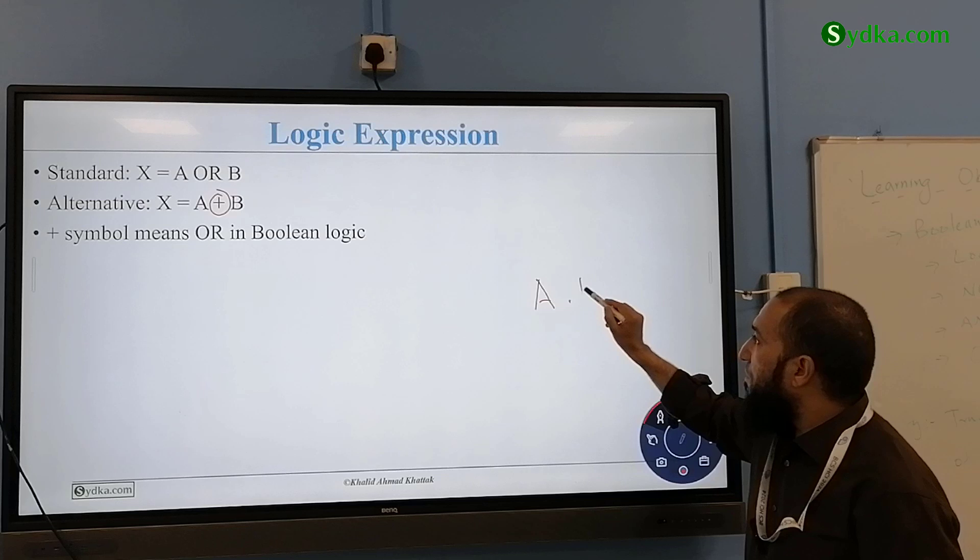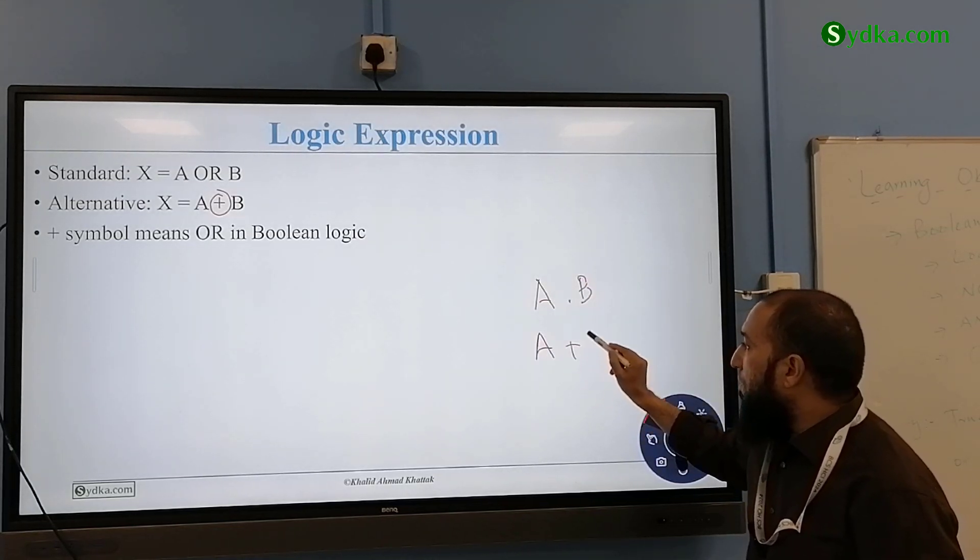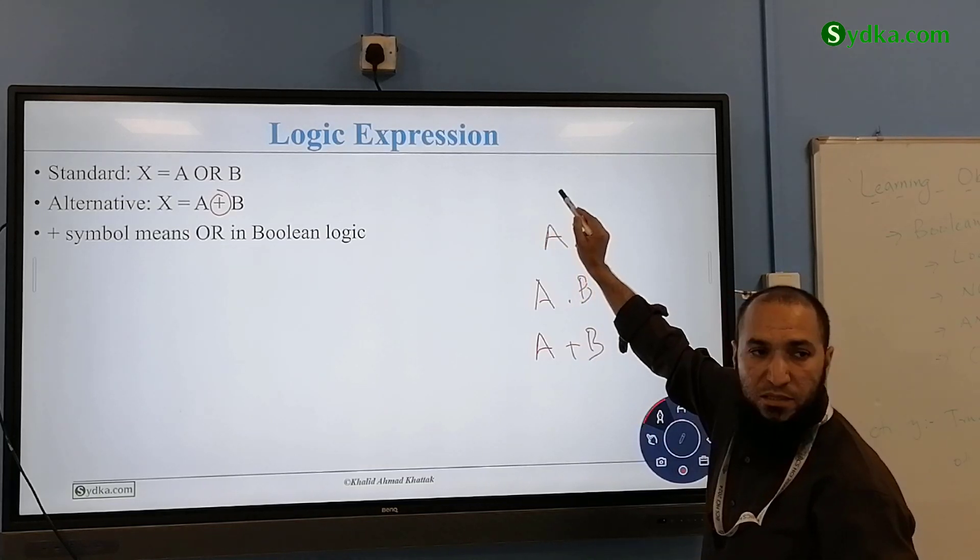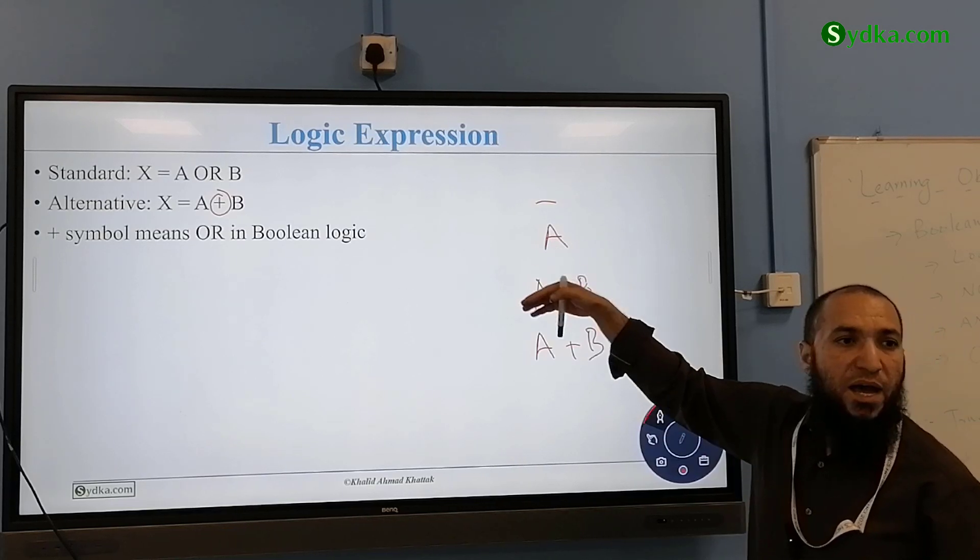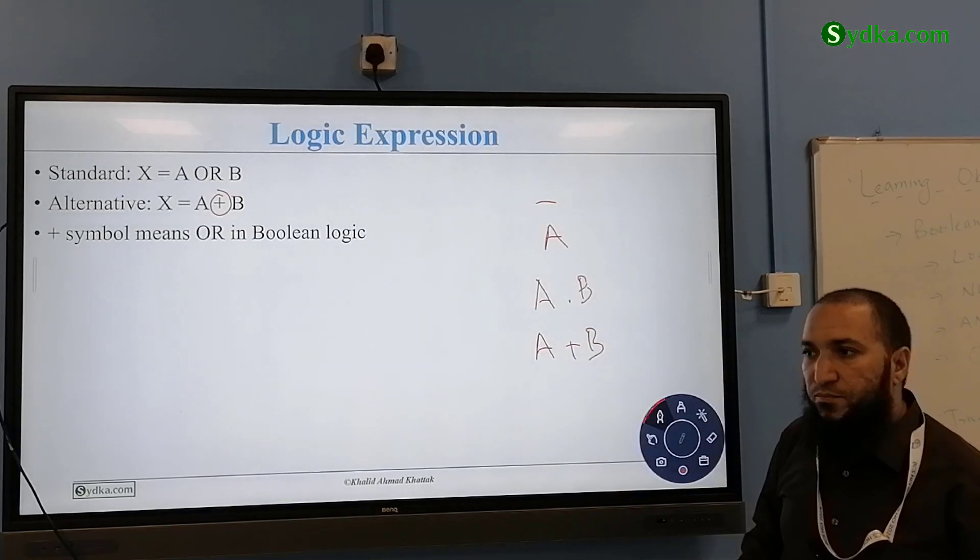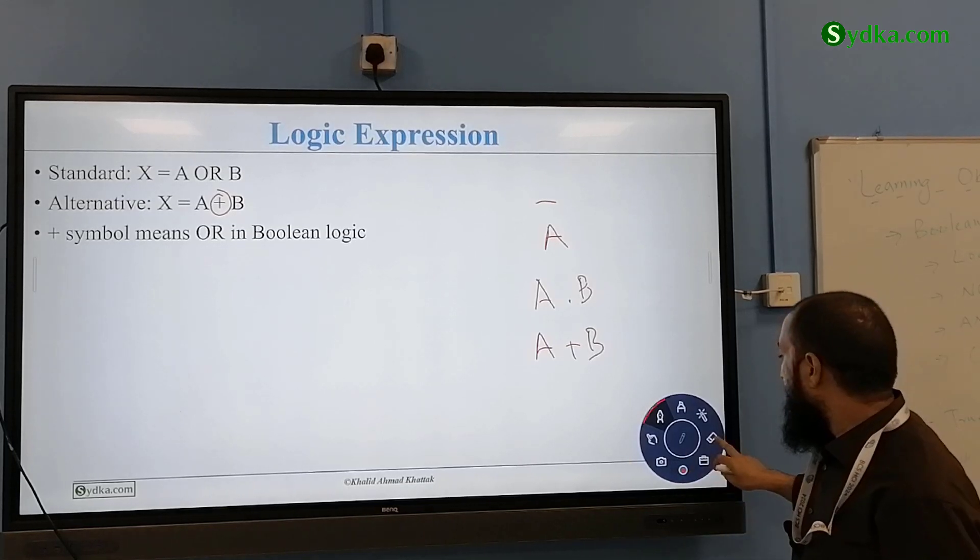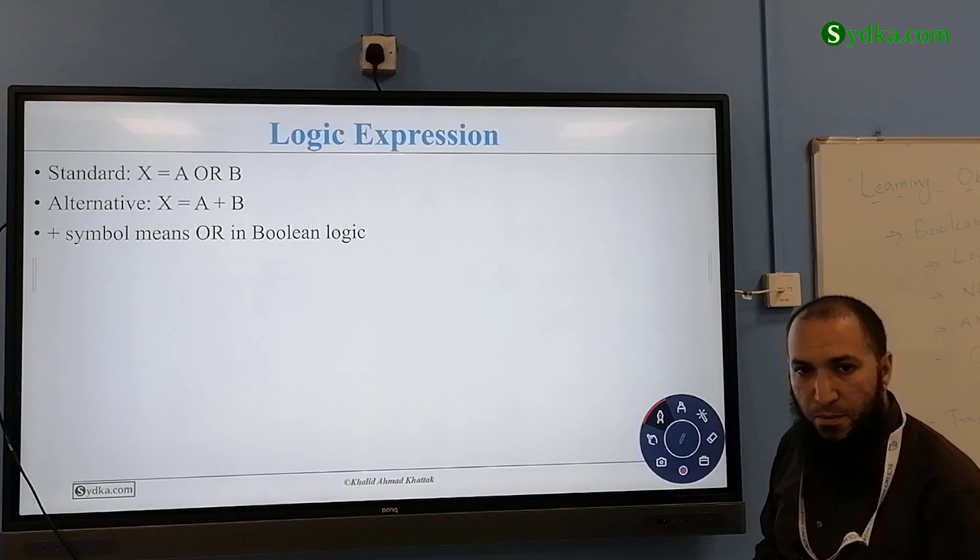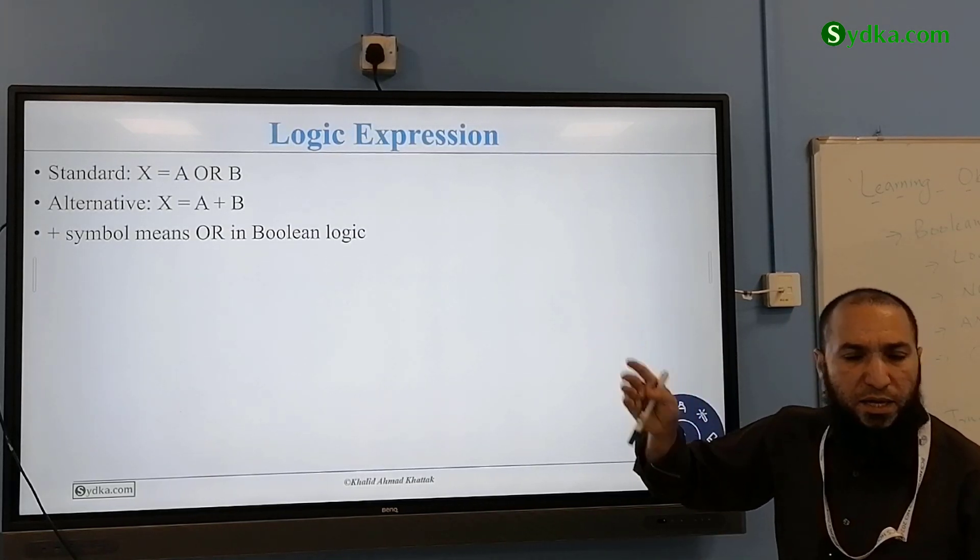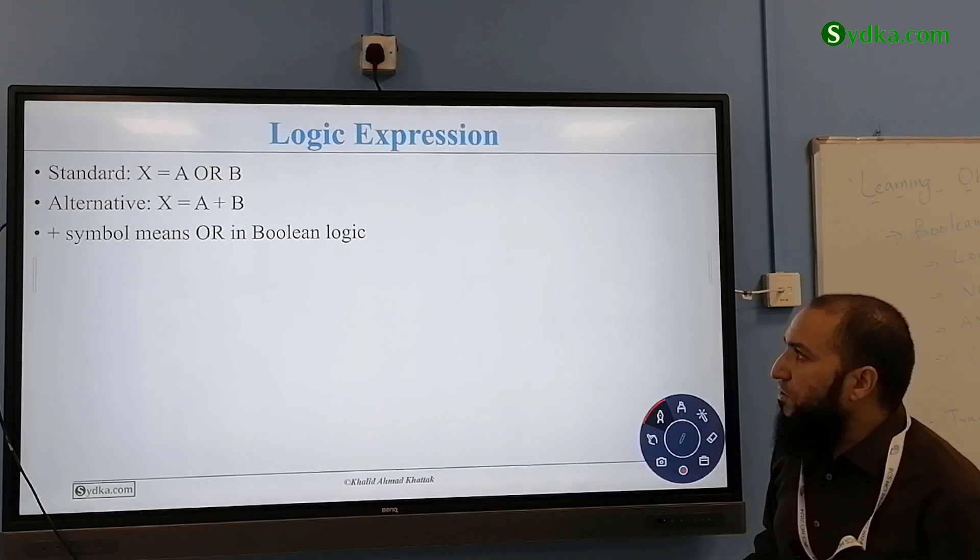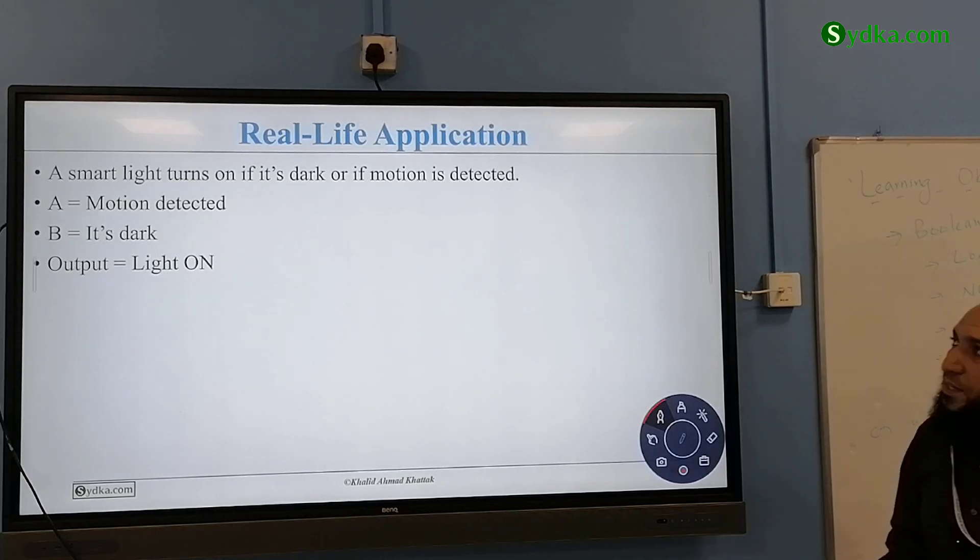So, A dot B is an AND gate, A, and what was the NOT gate? Anything, anything bar. Just, for easy way, A bar. A bar is easy way to say it, okay? So, A plus symbol means OR gate, okay?